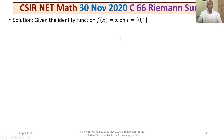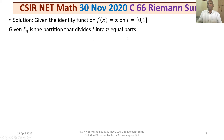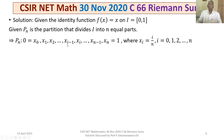We are given the identity function f(x) = x defined on the closed and bounded unit interval [0,1]. Since Pn divides I into n equal parts and I has length 1, each part has length 1/n. Hence Pn = {x0=0, x1, x2, ..., xn=1} where xi = i/n for i = 0, 1, 2, ..., n. That is, Pn = {0, 1/n, 2/n, 3/n, ..., (n-1)/n, 1}.